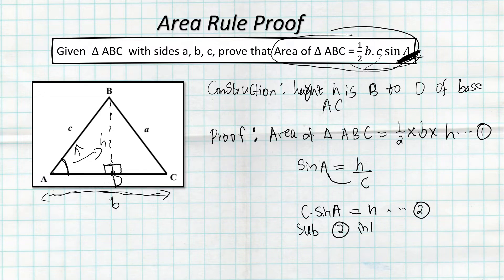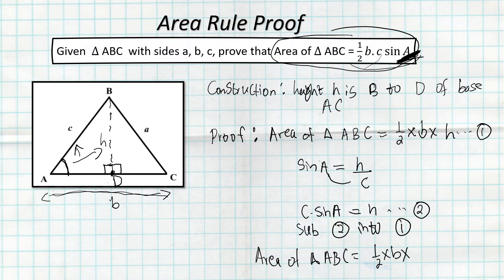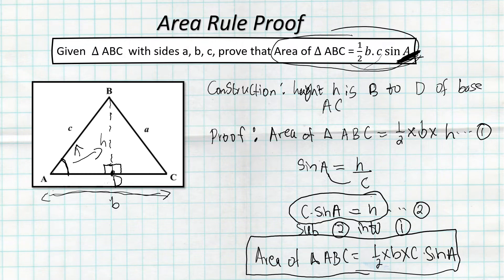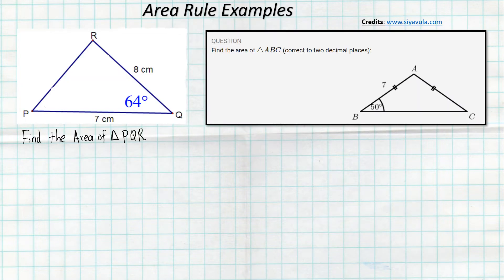Substituting equation two into equation one: area of triangle ABC = ½ × b × c sin A. We have proven the formula. To summarize: construct the perpendicular height, write the area as ½ × base × height, use sin A = h/c to get h = c sin A, then substitute to prove the area rule.